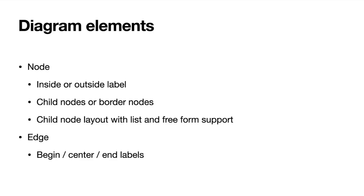What can you display in a SiriusWeb diagram? There are two main concepts: nodes and edges. For a node, you can define how its label will be displayed — inside the node, outside, or both. You can also define the kind of child nodes or border nodes you will have. Child nodes can be displayed as a list or as regular nodes inside their parent.